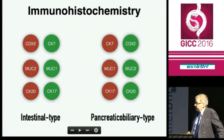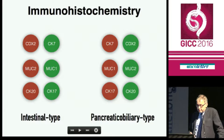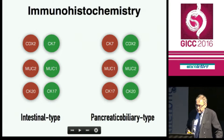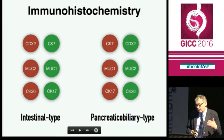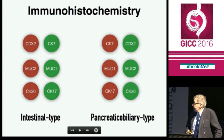As already said by the previous speaker Daniela, there is a difference in terms of expression of some proteins, and we use this expression to distinguish between the two types. In red you have the proteins that are expressed, and in green the proteins that are not expressed in the type. As you can see, there is a mirror image between intestinal type and pancreaticobiliary type.